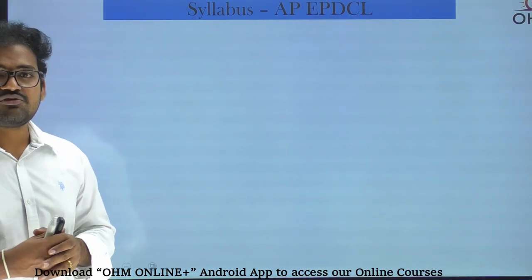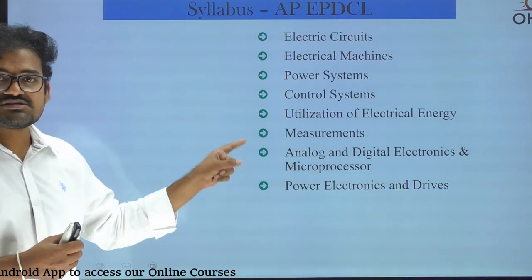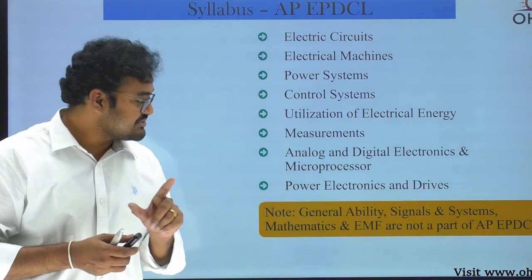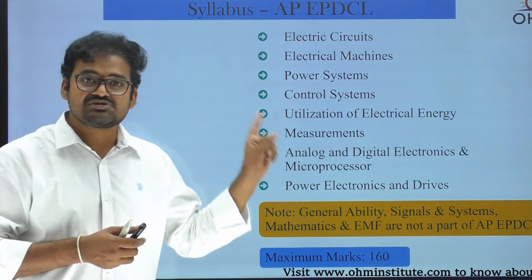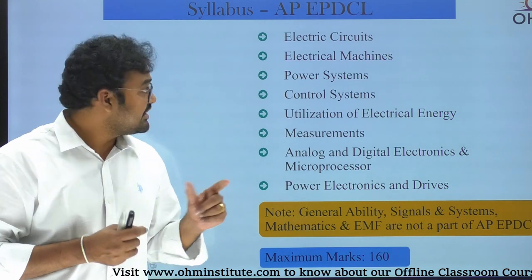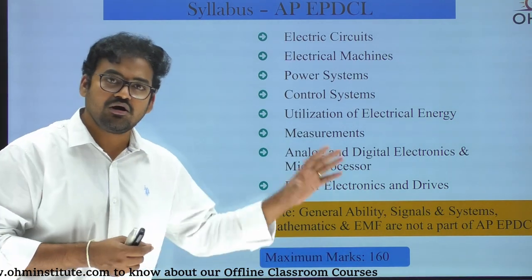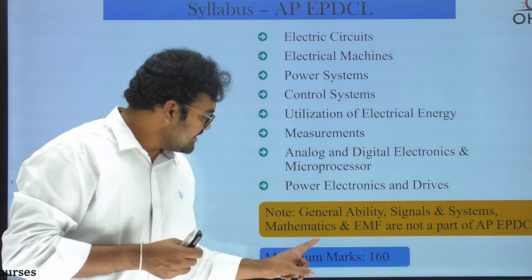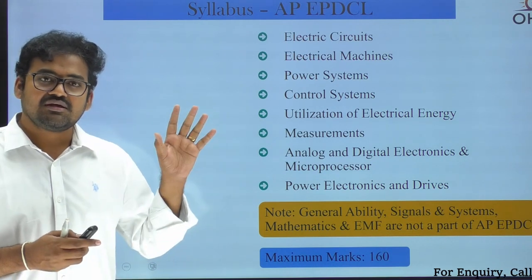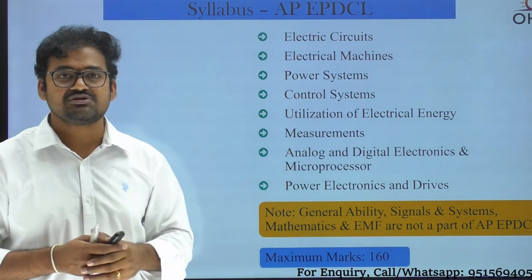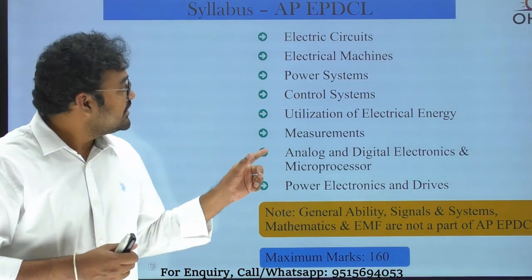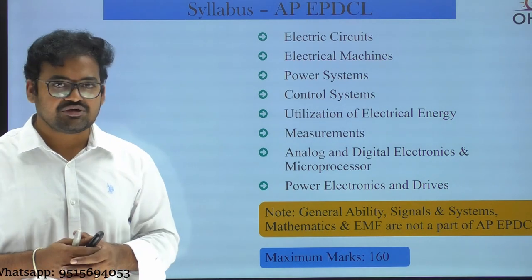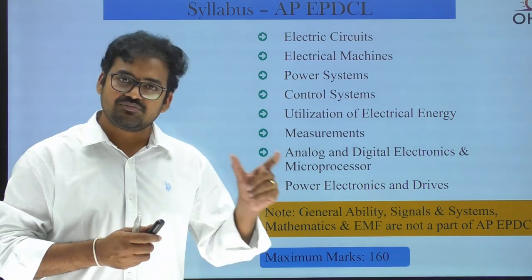EPDCL exam syllabus is very similar to SPDCL — distribution corporation syllabus is the same in Andhra Pradesh. The only difference is the examination pattern: SPDCL is conducted for 100 marks whereas EPDCL is for 160 marks, and all 160 marks are from technical subjects only. There is no general ability and no signals, systems, EMF, or mathematics in EPDCL. The key difference between AP exams: Transco has general ability while SPDCL and EPDCL do not.